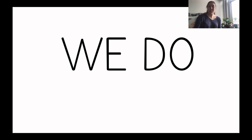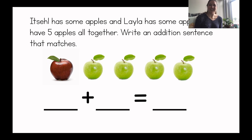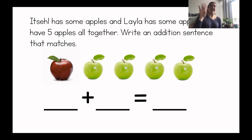All right, now we're going to write an addition number sentence together. Here's a new word problem. It's about apples. This says, Itzel has some apples, and Layla has some apples. They have five apples all together. Write an addition sentence that matches.